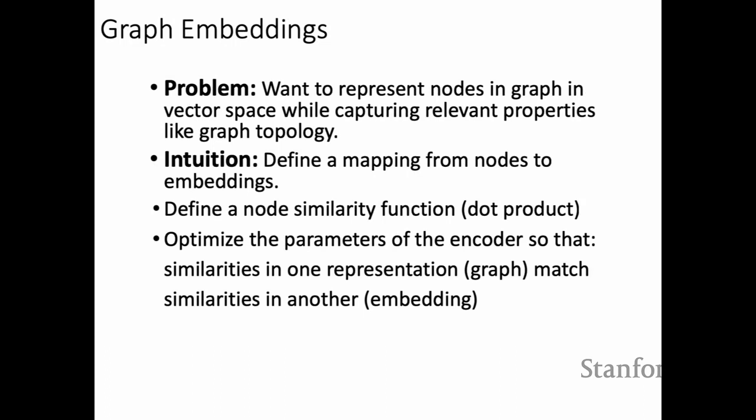For graph embeddings, the problem is performing machine learning on a graph. We want to represent nodes in a continuous vector space while capturing important properties around each node. We come up with a mapping from nodes to embeddings and define a node similarity function in both the embedding space and the graph space. In the continuous embedding space, we use dot product similarity. We optimize the encoder parameters such that similarities in one representation map to similarities in the other.